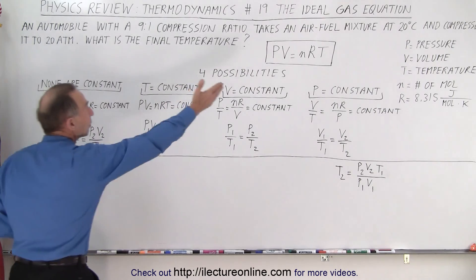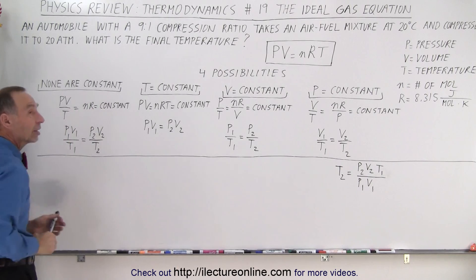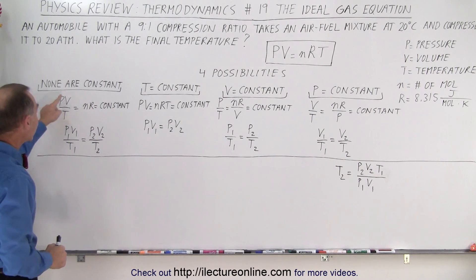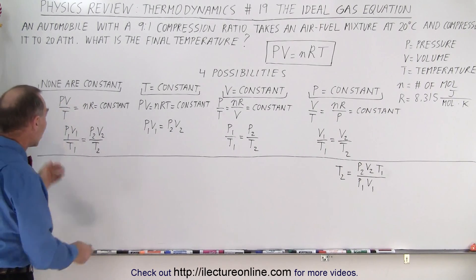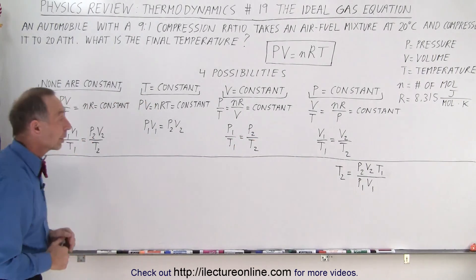PV and T are three state variables that can vary, and on the right side we have the number of moles times the gas constant, and that of course is a constant. So since P times V divided by T is constant, we then come up with this equation instead of one of the other three we can end up with.